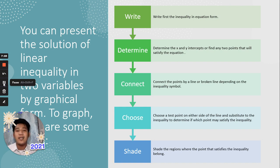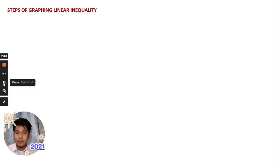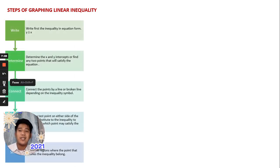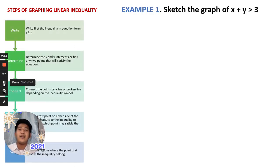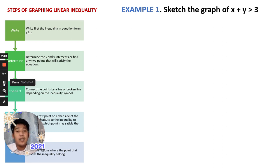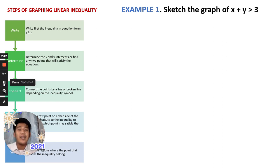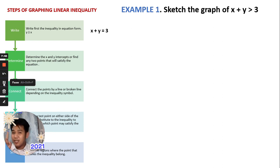Let's take Example 1. Here are the steps of graphing a linear inequality. Sketch the graph of x + y > 3. The first step is to write the inequality in equation form. So, the equation form of our given is x + y = 3. That is the equation; the original one is the inequality.